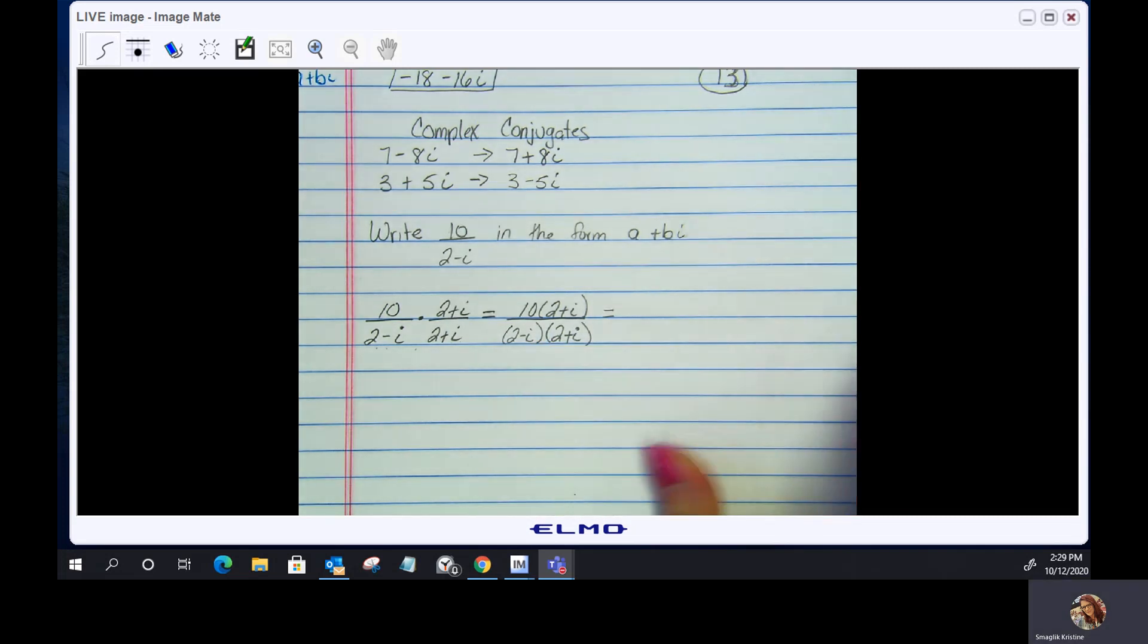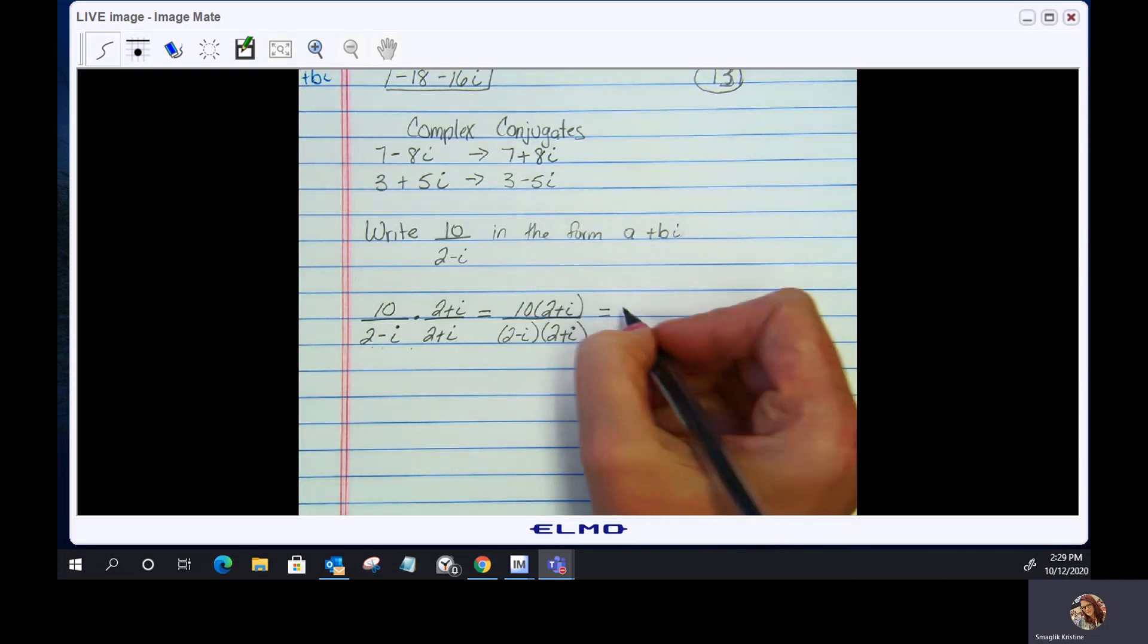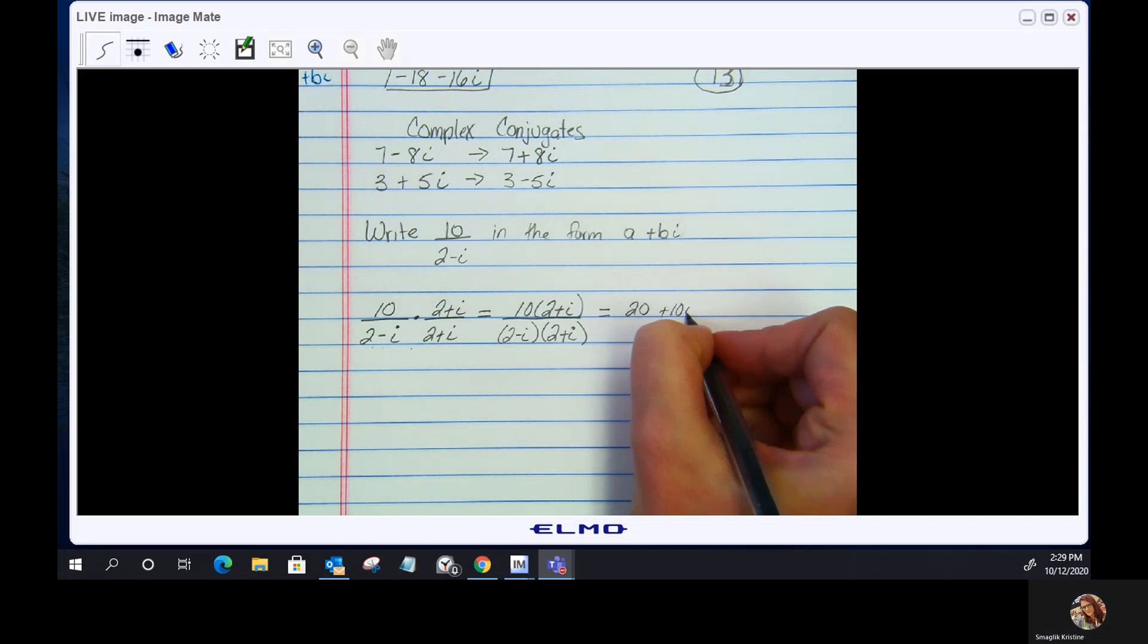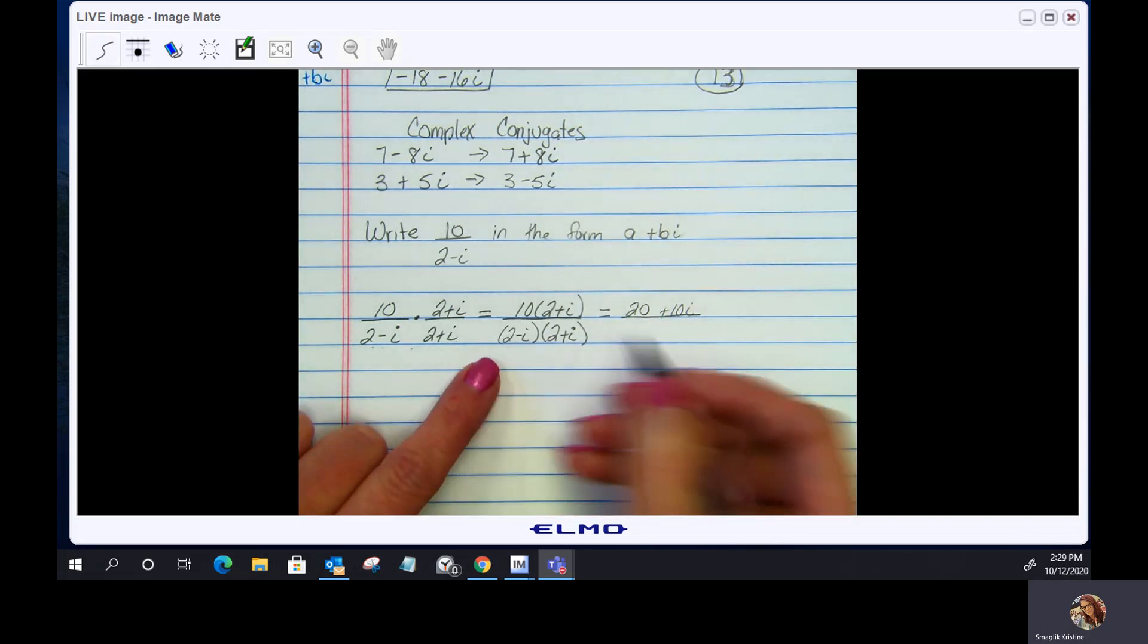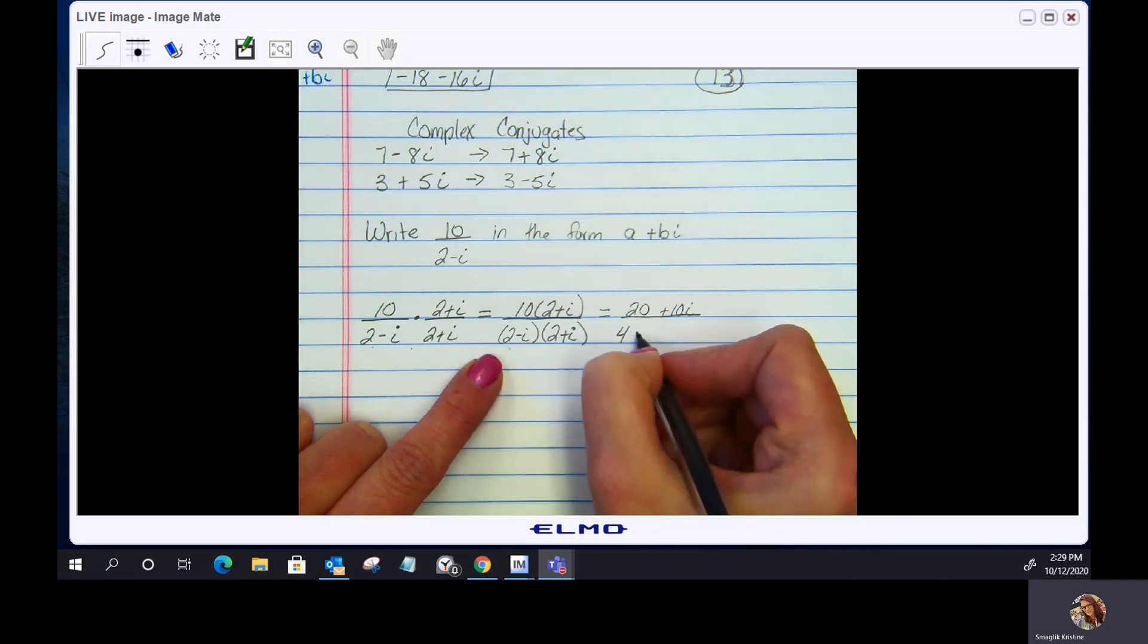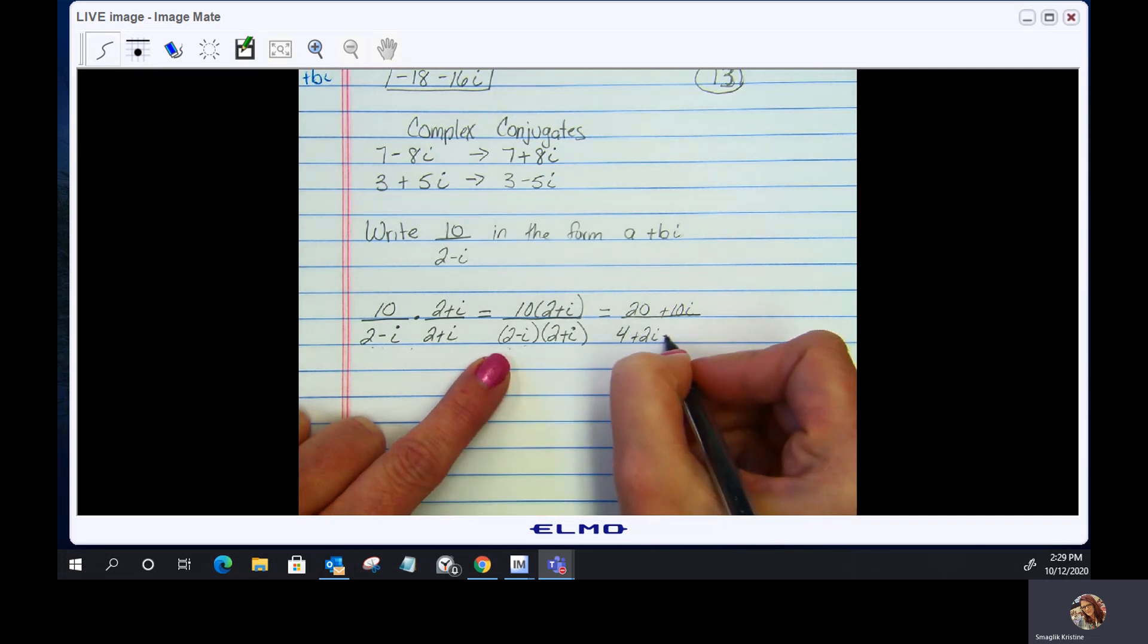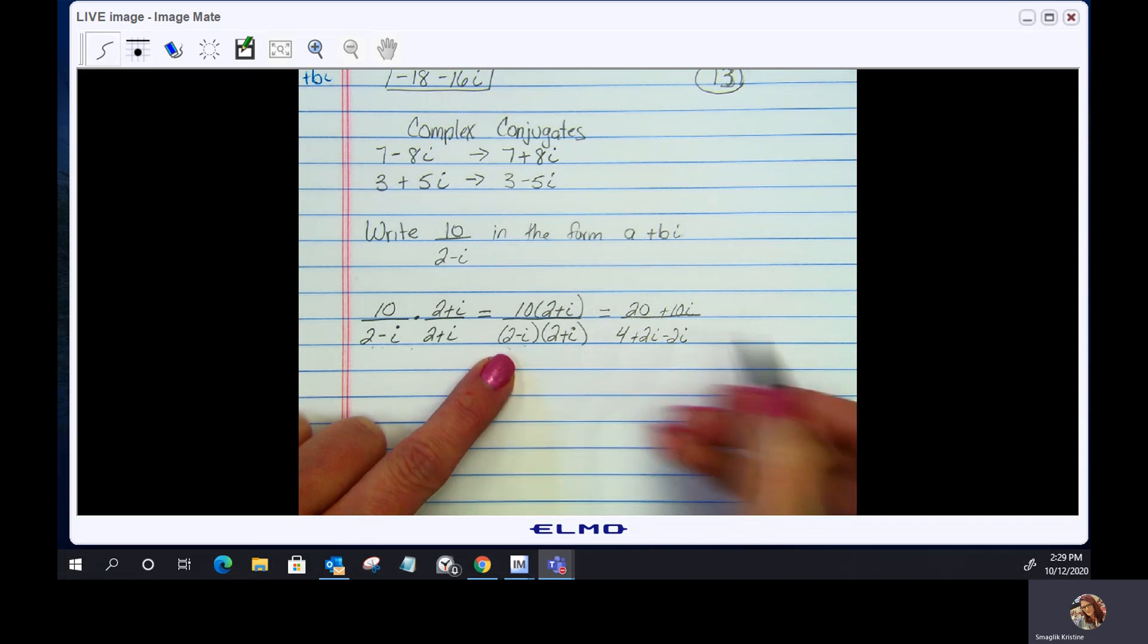Now I'm going to use the distributive property and work it through. 10 times 2 is 20. 10 times i is 10i. All over: 2 times 2 is 4, 2 times i is 2i, negative i times 2 is negative 2i. Notice your middle terms are canceling each other out. Negative i times i is negative i squared.